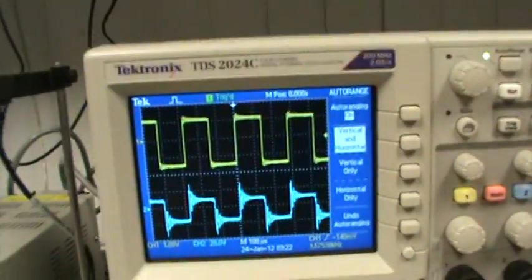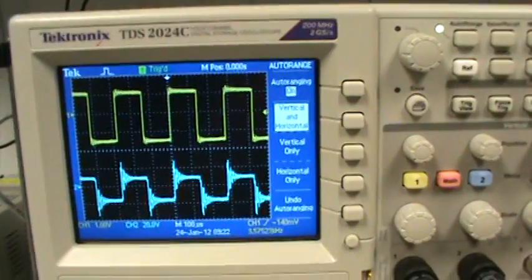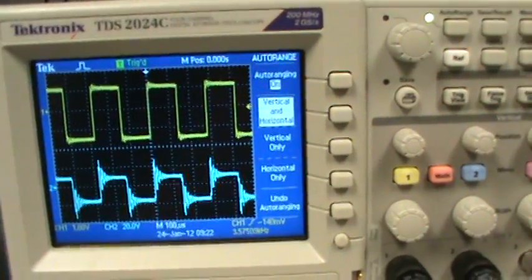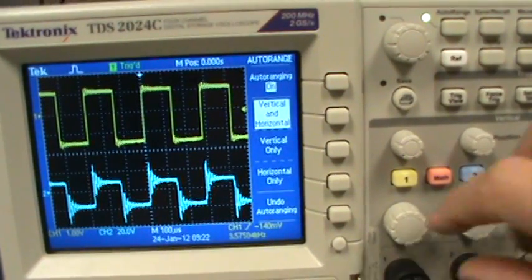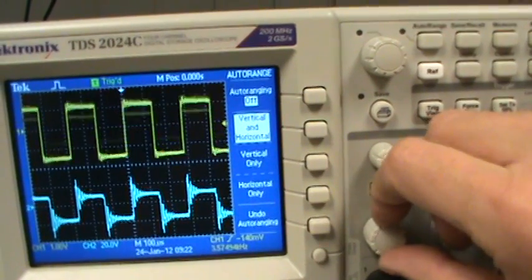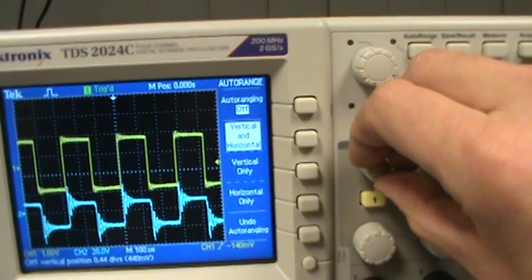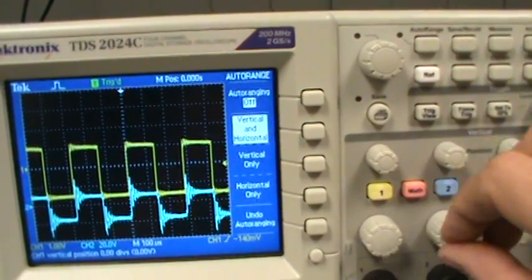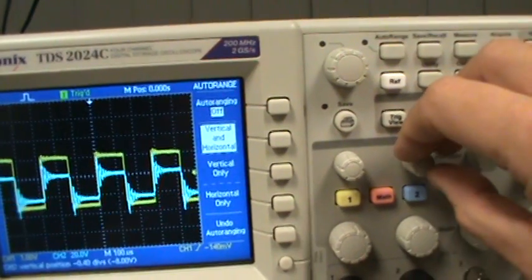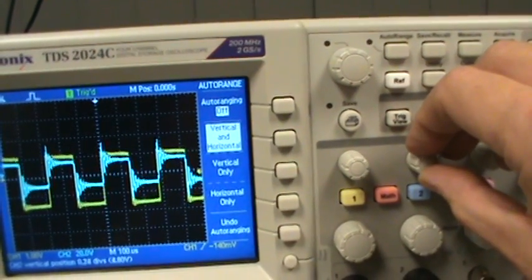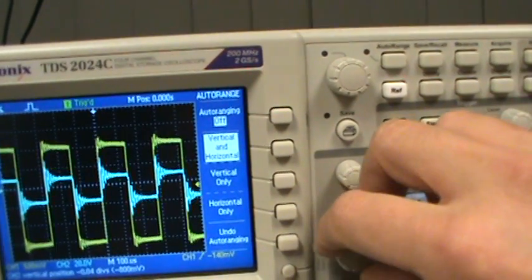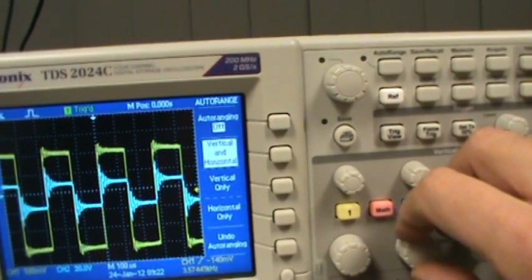Now looking at our signal up here, we basically have our square wave in and our square wave out. The knob here changes your amplitude and offset. And what we're looking for is to overlap our signals. So we want to put the grounds basically on top of each other. And now we can get a much larger signal.